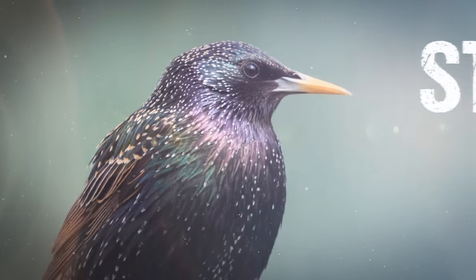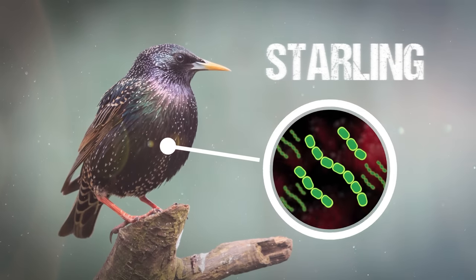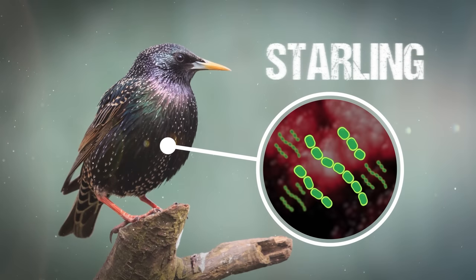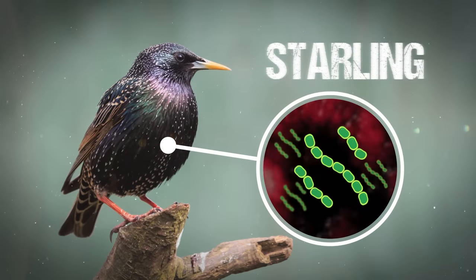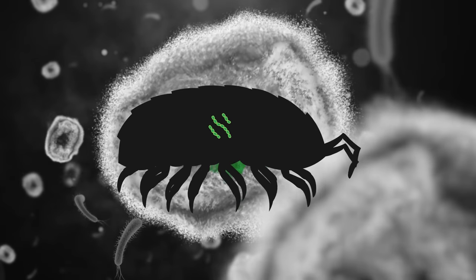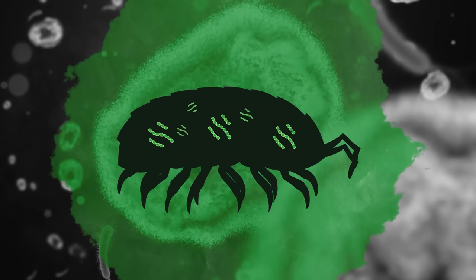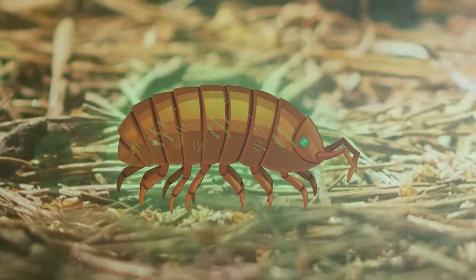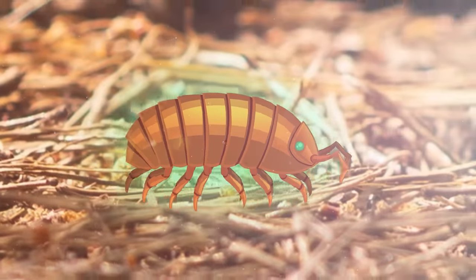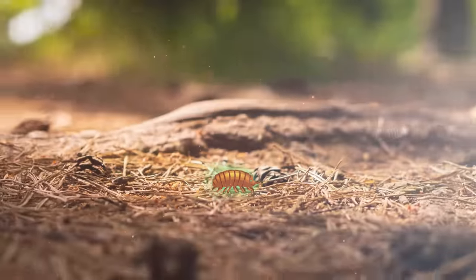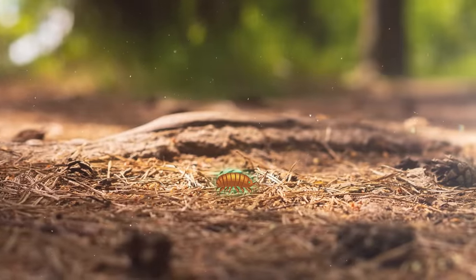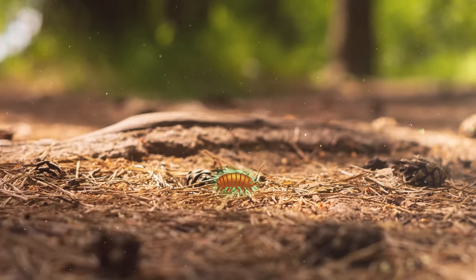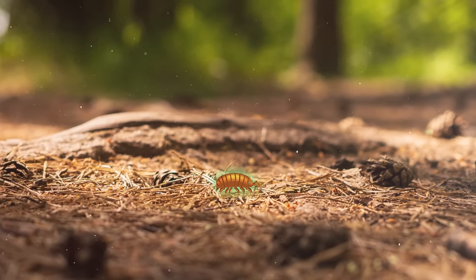Unfortunately for the pillbug, starling digestive tracts often carry a parasite that's far more dangerous to the bug than it is to the bird. Once safely ensconced inside the pillbug, this parasite seizes control. To complete its life cycle, the parasite needs to make its way back inside a starling.